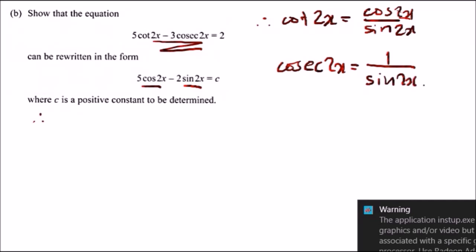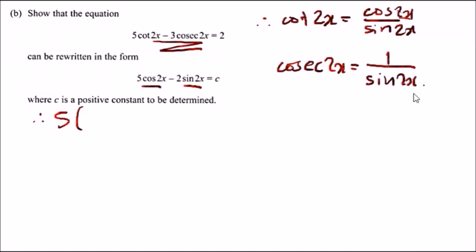All you want to do now is substitute back in and see what happens. Replacing these two with the following identities, we should get 5 times cot 2x, which is cos 2x over sine 2x, minus 3 times cosec, which is 1 over sine 2x, equals 2.